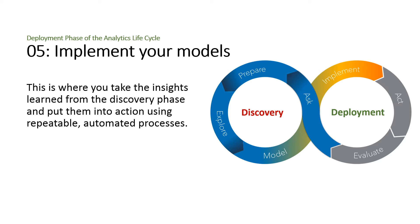The second phase is the deployment phase of the analytics life cycle. Implement your models. This is where you take the insights learned from the discovery phase and put them into action using repeatable, automated processes. In many organizations this is the point where the analytical modeling process slows dramatically because there is no defined transition between discovery and deployment or collaboration between the model developers and IT deployment architects, much less optimized automation. In most organizations the deployment environment is very different from the discovery environment, especially when the predictive models are supporting operational decision making. By integrating the discovery and deployment phases, you can create an automated, flexible and repeatable transition that improves operational decisions.